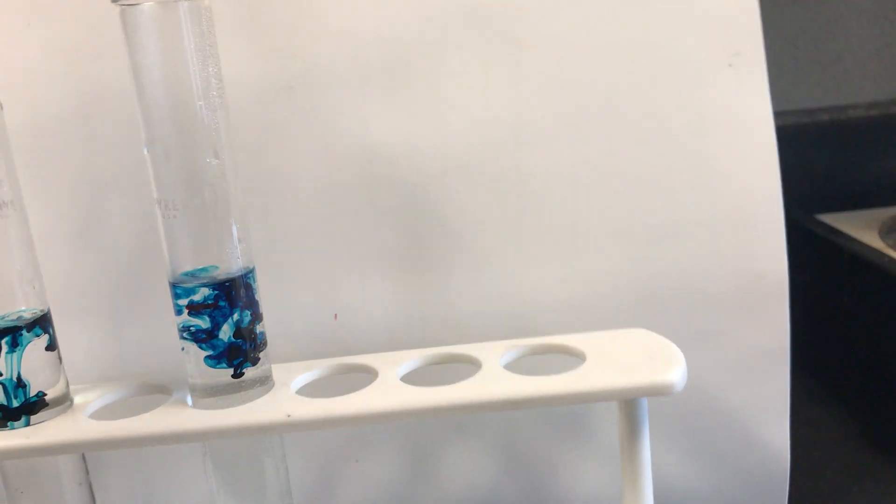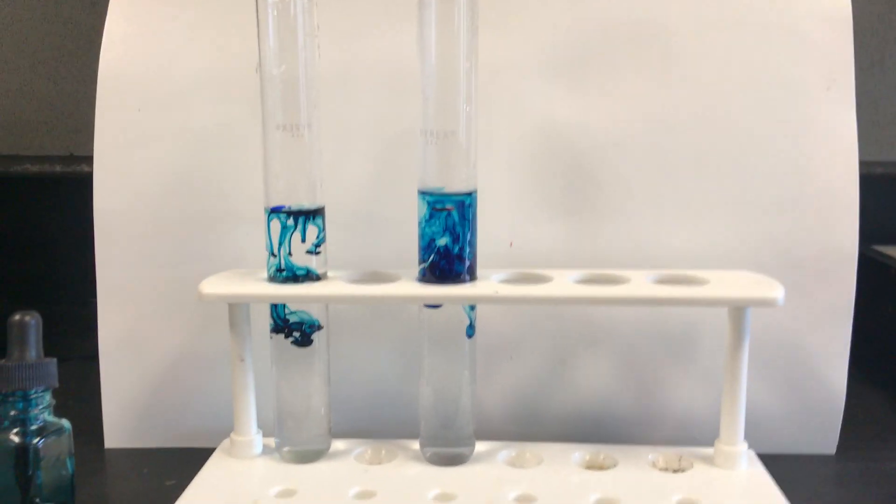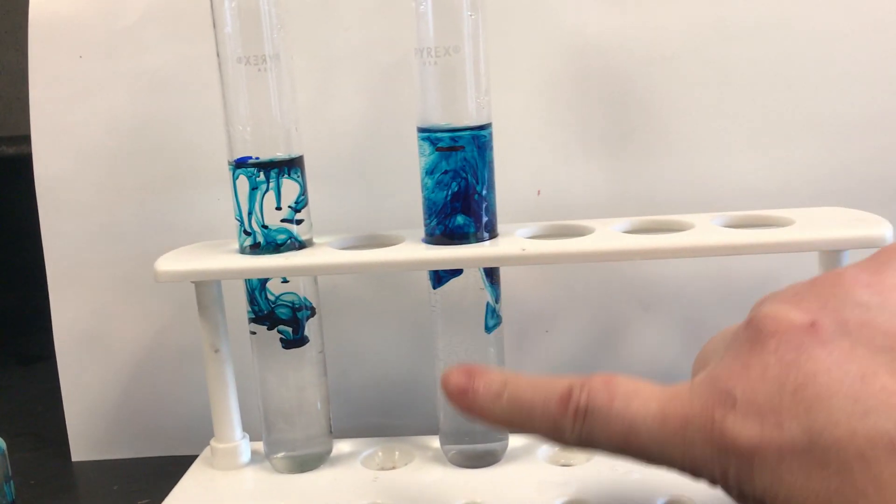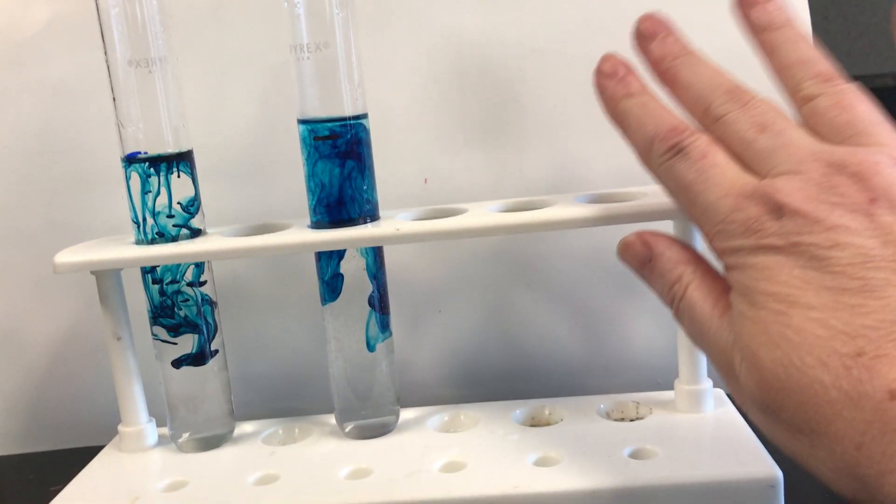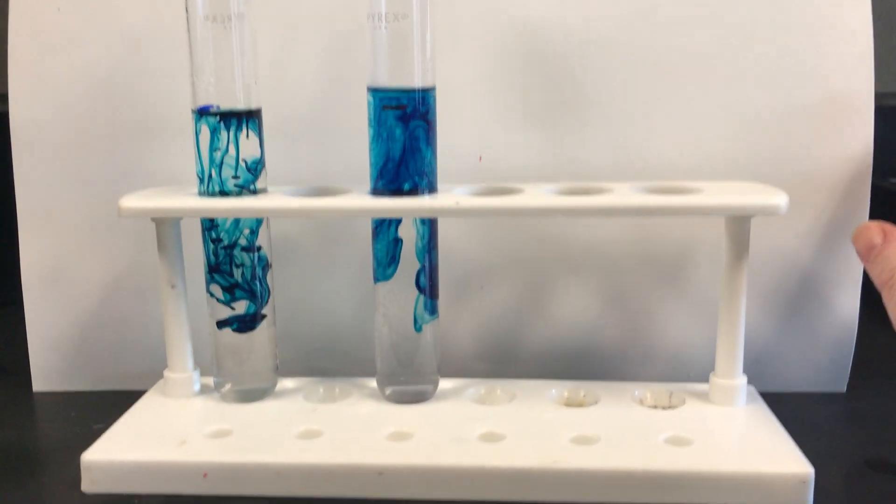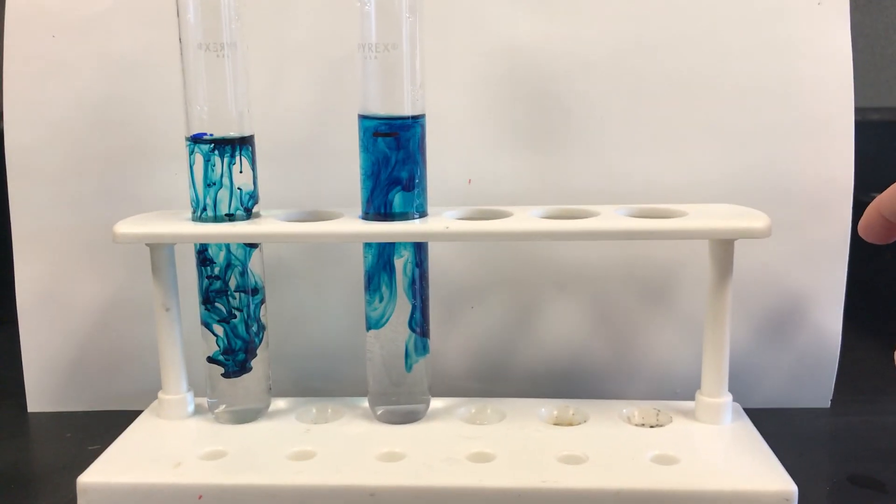After you do this you need to get your timer started because you're going to time both of these. You're going to time how long it takes for all this to become completely uniform. You should see no ribbons, completely blue clear water before you stop the timer. Then you write down your time.